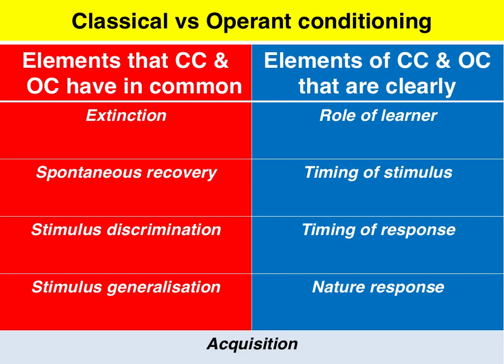In the case of classical conditioning, we present the conditioned stimulus on its own without the unconditioned stimulus, and it no longer elicits a conditioned response. In the case of operant conditioning, behaviour ceases when it is no longer reinforced or punished.